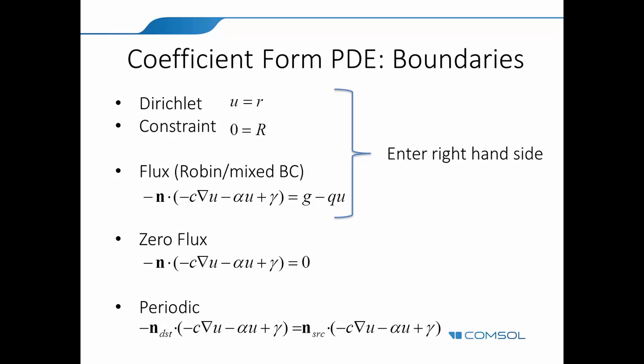Or if you are having a more complicated one, we have something called constraint. The constraint basically says zero is equal to R. So then what you have to do is put the expression that needs to be zero at the boundary. And that is R. And then there are others as well, but you pick the boundary conditions.